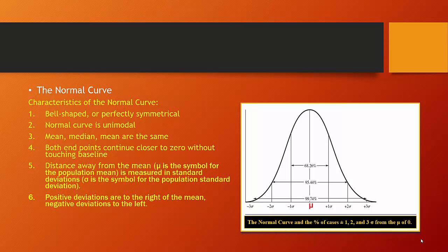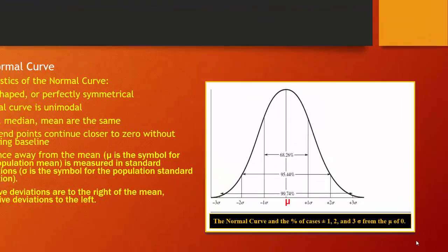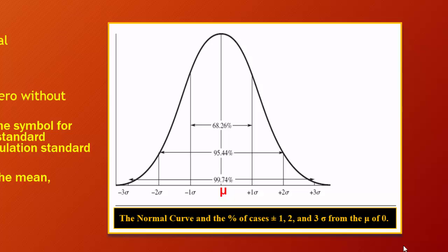Notice that the bell-shaped curve looks very similar to our coin-flipping experiment. It's divided in the center — half the observations would be above the mean, half below. It's a perfectly symmetrical, unimodal distribution where the mean, median, and mode all share the same value. As you taper off towards the ends, in theory we get closer and closer to the line but it never actually reaches the horizon. Distance away from the mean for a normal distribution is measured in standard deviations — moving right means positive standard deviations, moving left means negative standard deviations away from the mean.